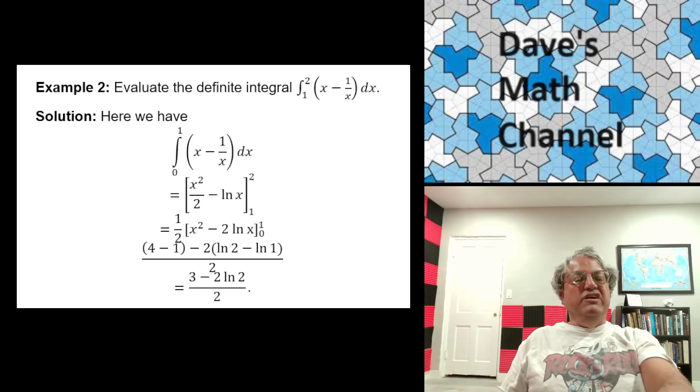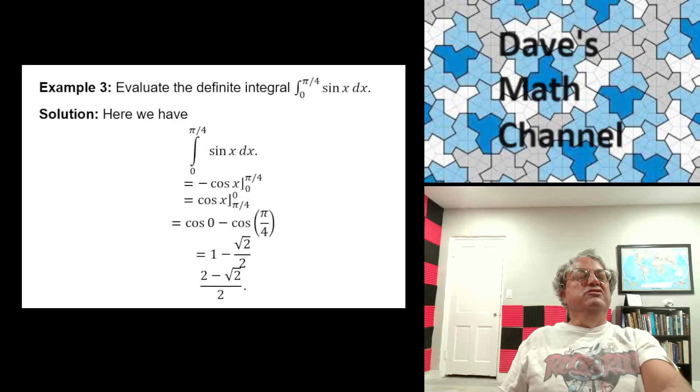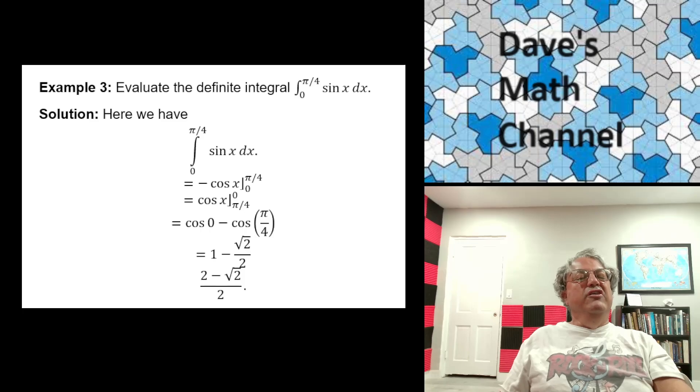Anyway, so that's that example. Let's look at a third example. Let's evaluate the definite integral of sine x from x equals 0 to x equals pi over 4. Well, the integral of sine x, this you can get immediately from the table I showed at the beginning. That's just minus cosine x. And so we're left with minus cosine x, x evaluated between 0 and pi over 4.